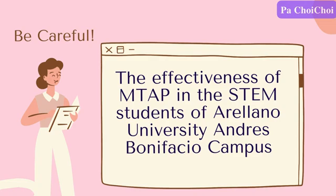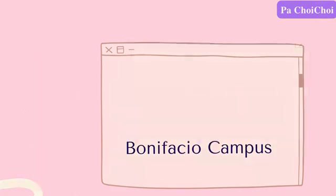We also have to be careful in coming up with a new idea. For a title like 'The Effectiveness of MTAP in the STEM Students of Aureliano University Andres Bonifacio Campus,' we need to think about how we are going to execute the whole process and who will be our target participants. If you plan to compare students who took MTAP and those who did not, the paper would be a comparative research rather than a qualitative one. This is why we must be familiar with different types of research before finalizing a title.